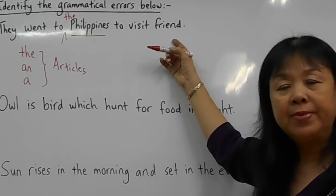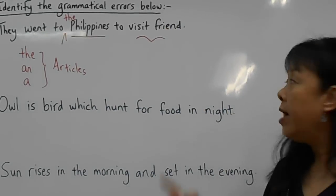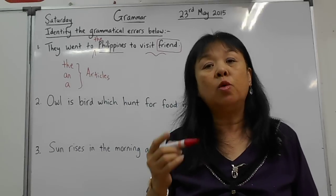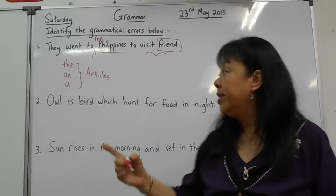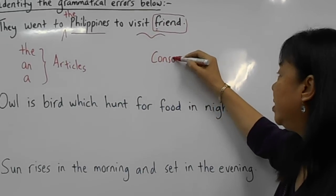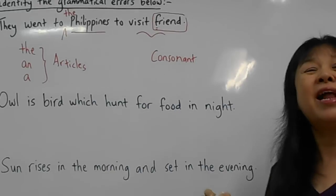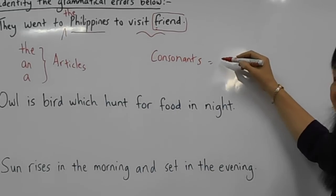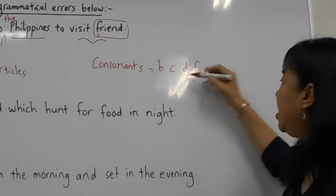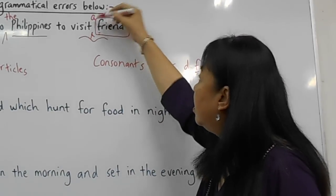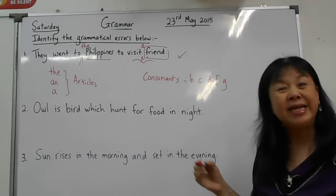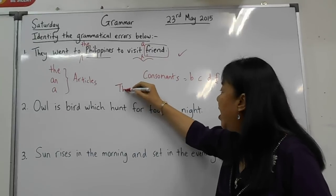'To visit friend' is another mistake, because the student says 'friend,' which we understand as one friend. Therefore an article is missing. The word 'friend' starts with 'f,' which is a consonant. Consonants are letters such as b, c, d, f, g. Because 'f' is a consonant, we should say 'a friend.'